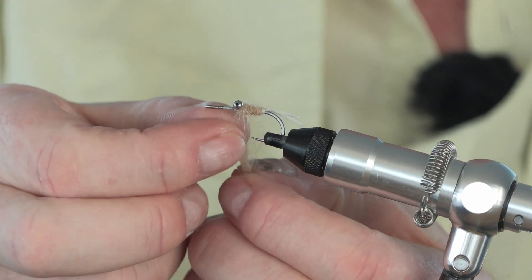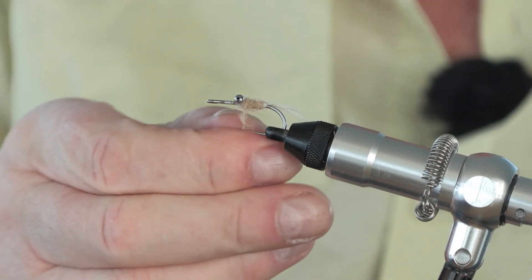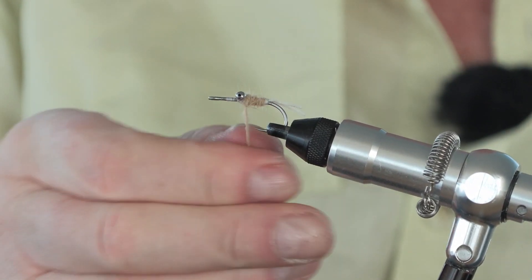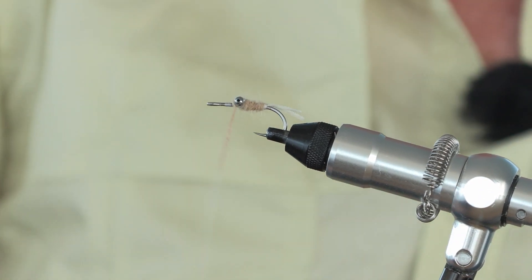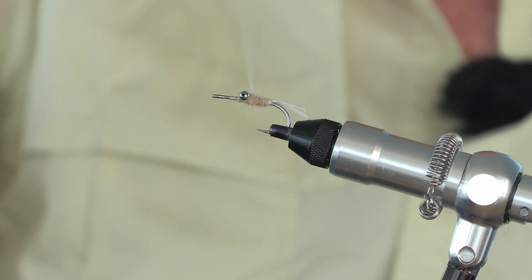Now what I'm going to do is I'm going to figure of 8 some rabbit fur actually between the eyes. Keep it fairly loose because you want it to be a shaggy appearance just like a shrimp.